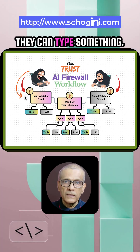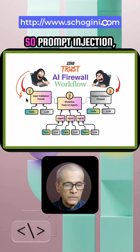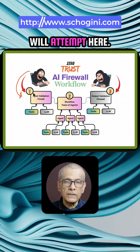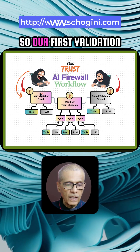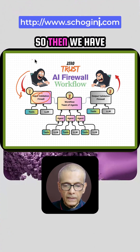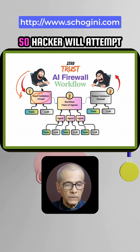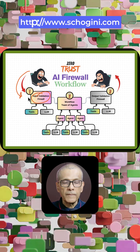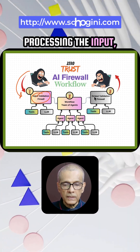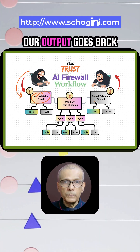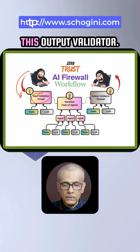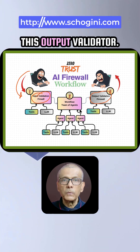That is the only place where they can type something. Prompt injection and all kinds of tricks — they will attempt here. So our first validation should happen here. Then we have output validation. The hacker will attempt tricks at input, and after processing, our output goes back through the output validator.